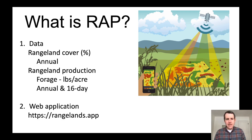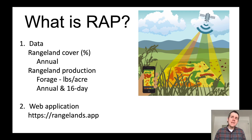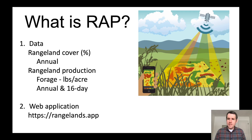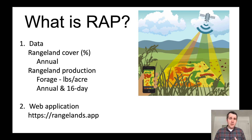The second thing that RAP is, is a web application. These data sets are very large and can be hard to work with. We recognized that and wanted people to be able to interact with them in a very easy to use way. So we built a web application available at rangelands.app, where anyone can go and visualize these data sets, do simple analyses, and in particular look at the trend in vegetation cover and production across a pasture, a ranch, a watershed, or a larger region.